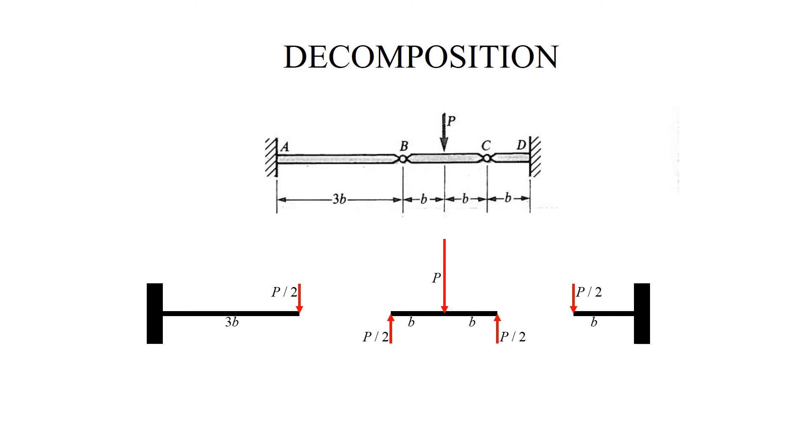The deflection at this point comes from three sources. First, of course, this beam bends. Then this end moves down, and that's dictated by the displacement of the tip of the left beam.